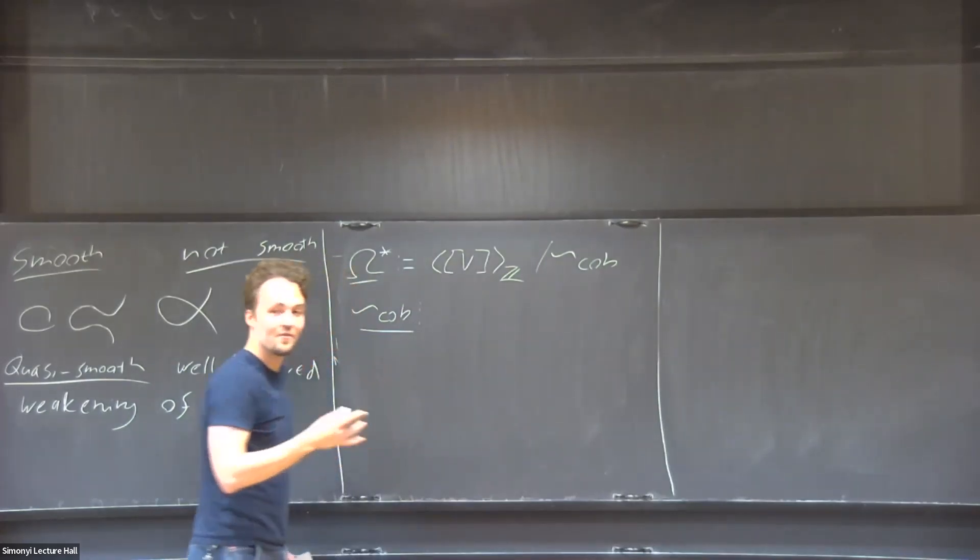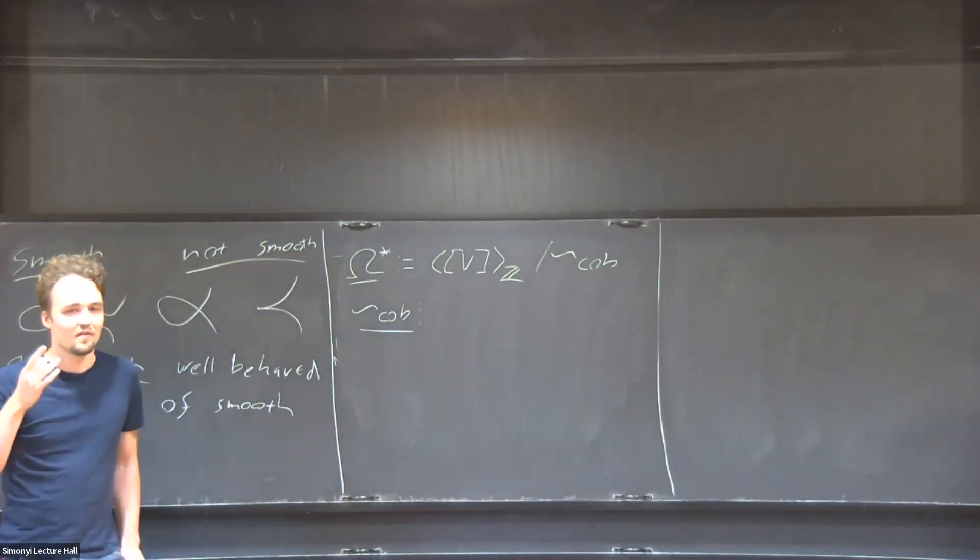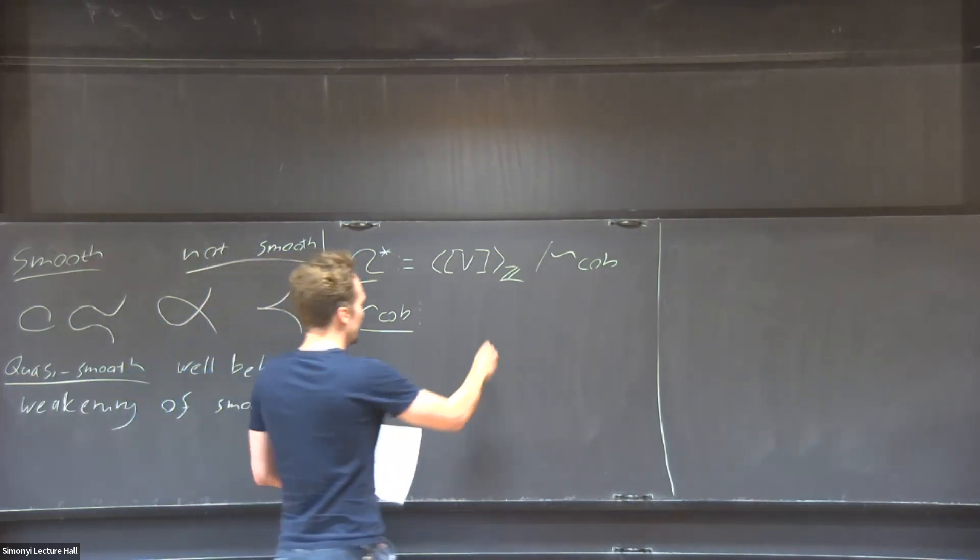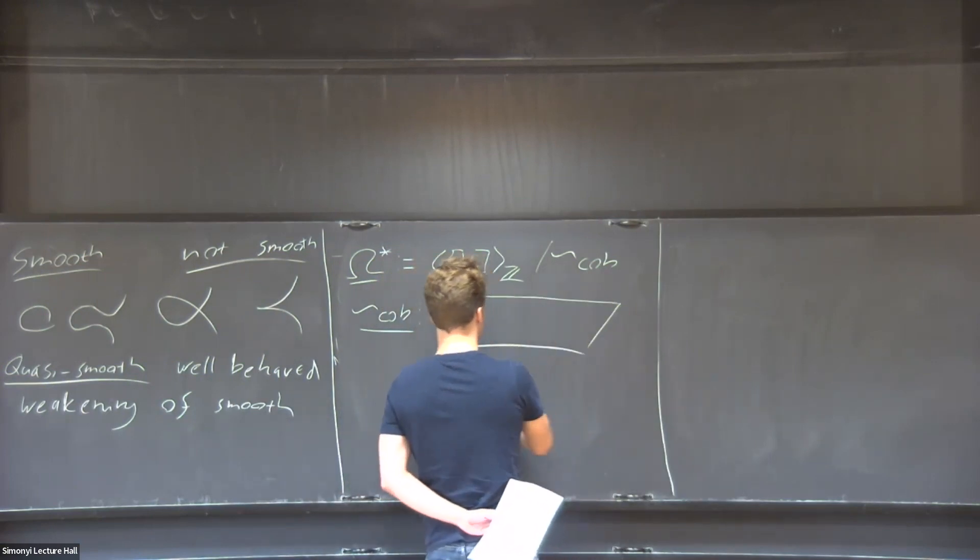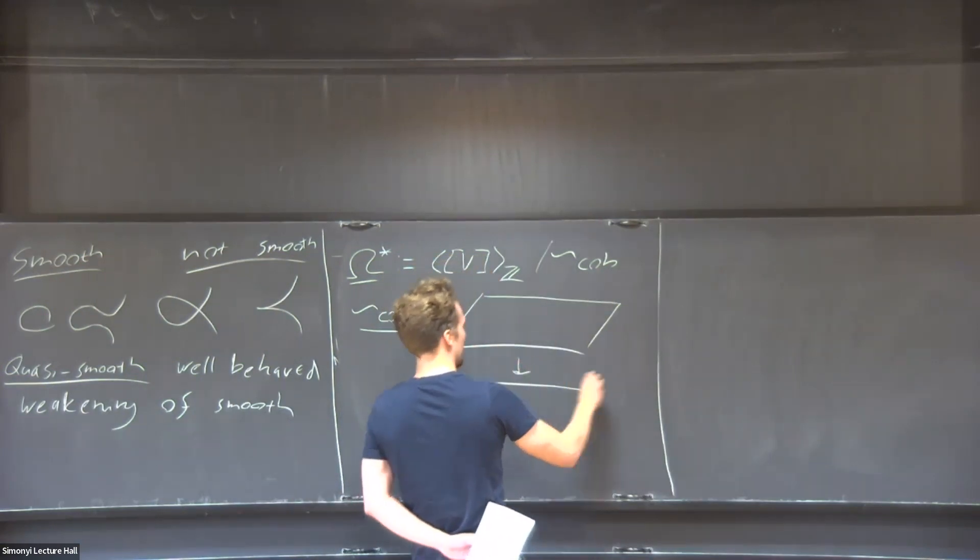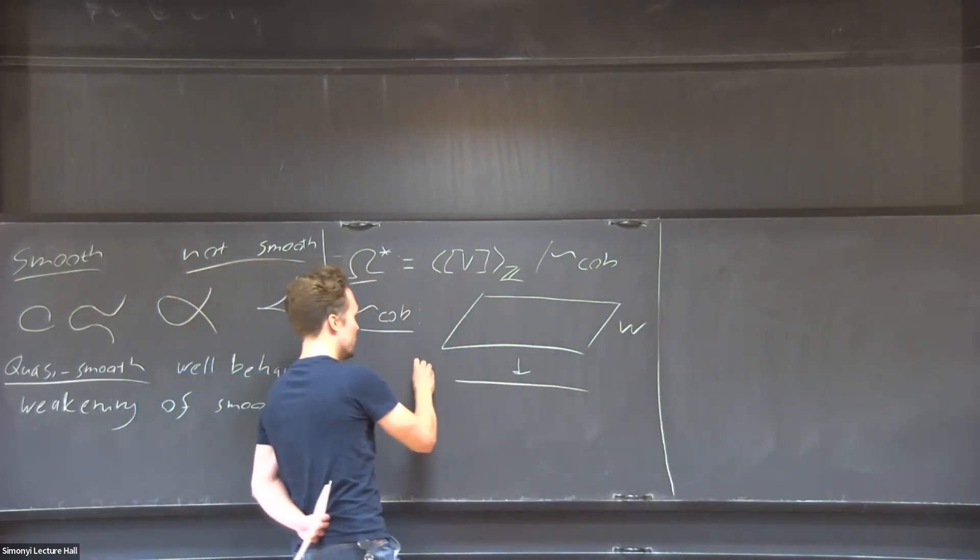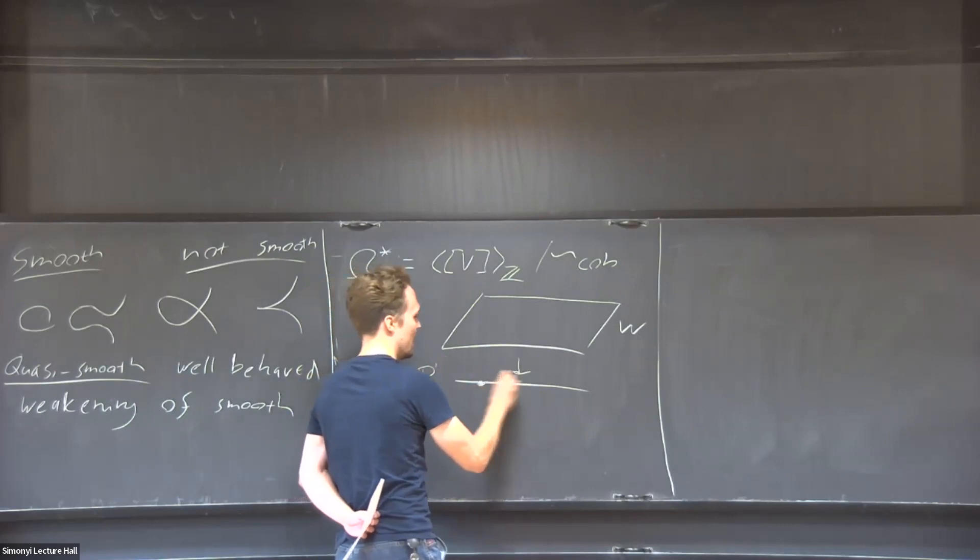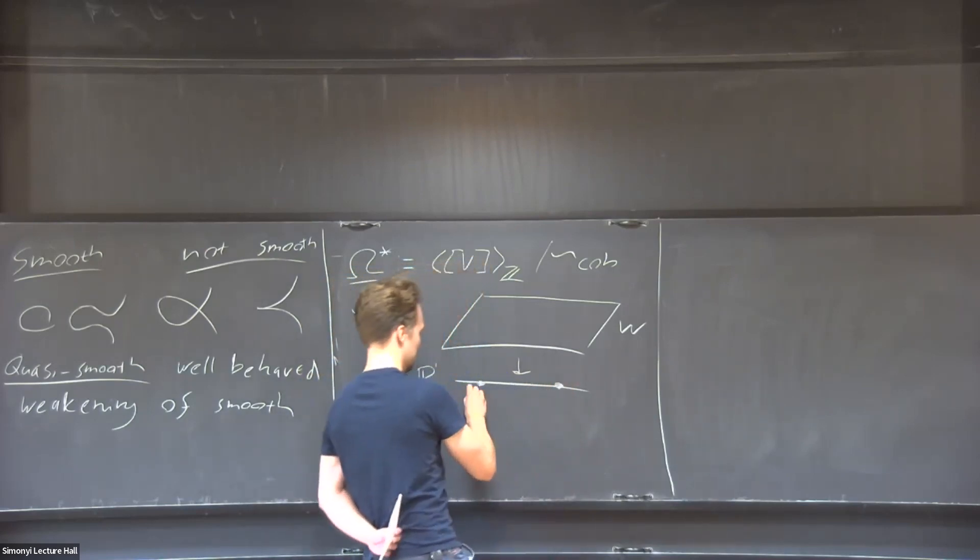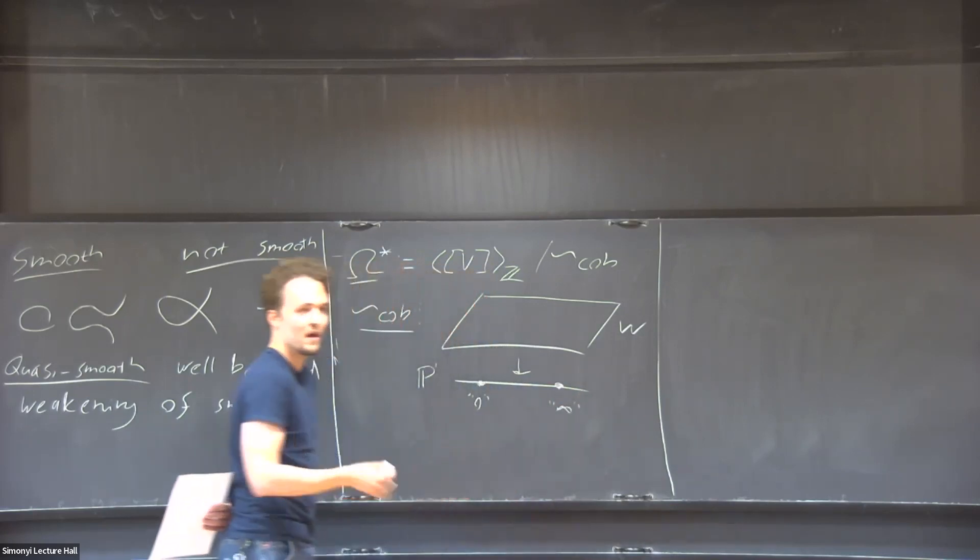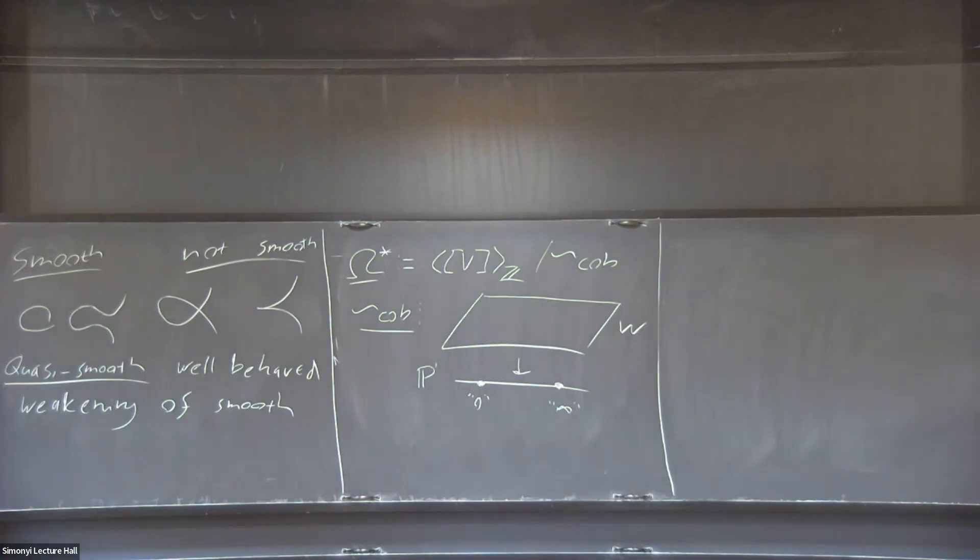I also have to explain this cobordism thing. If you have studied topology, this looks a bit familiar but also a bit weird. We have a big variety, also quasi-smooth, that maps to P^1. In P^1 you have at least two points—let's call them zero and infinity. Everyone has seen the Riemann sphere; this is P^1 over complex numbers. Zero is just the origin; infinity is the point at infinity.